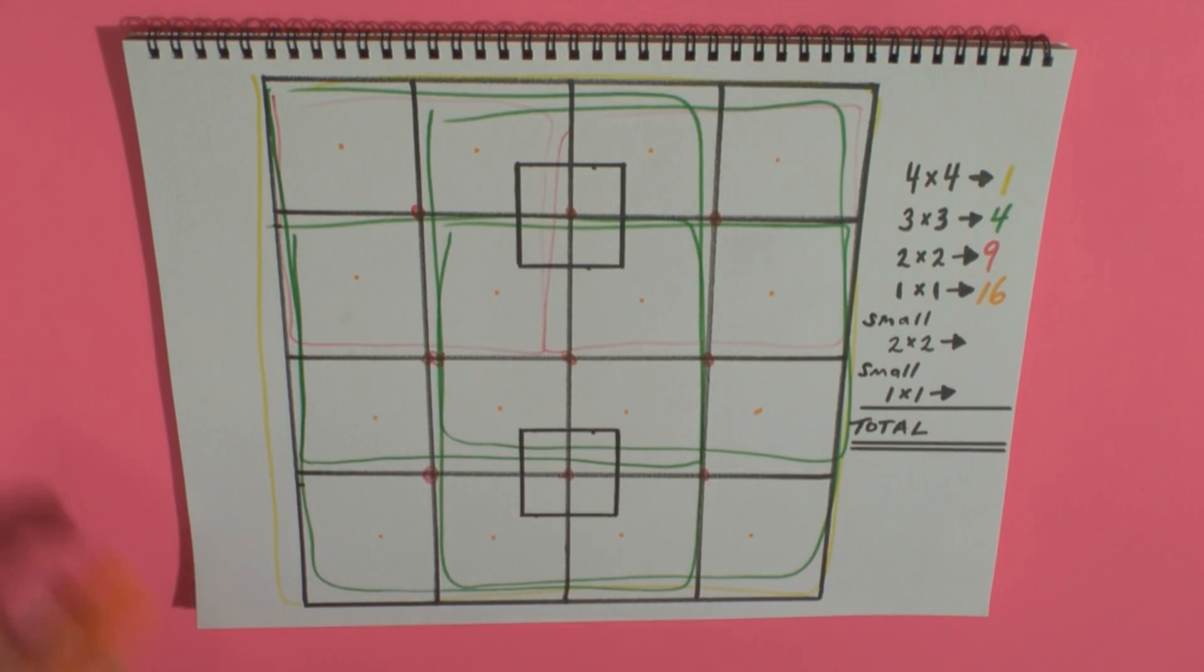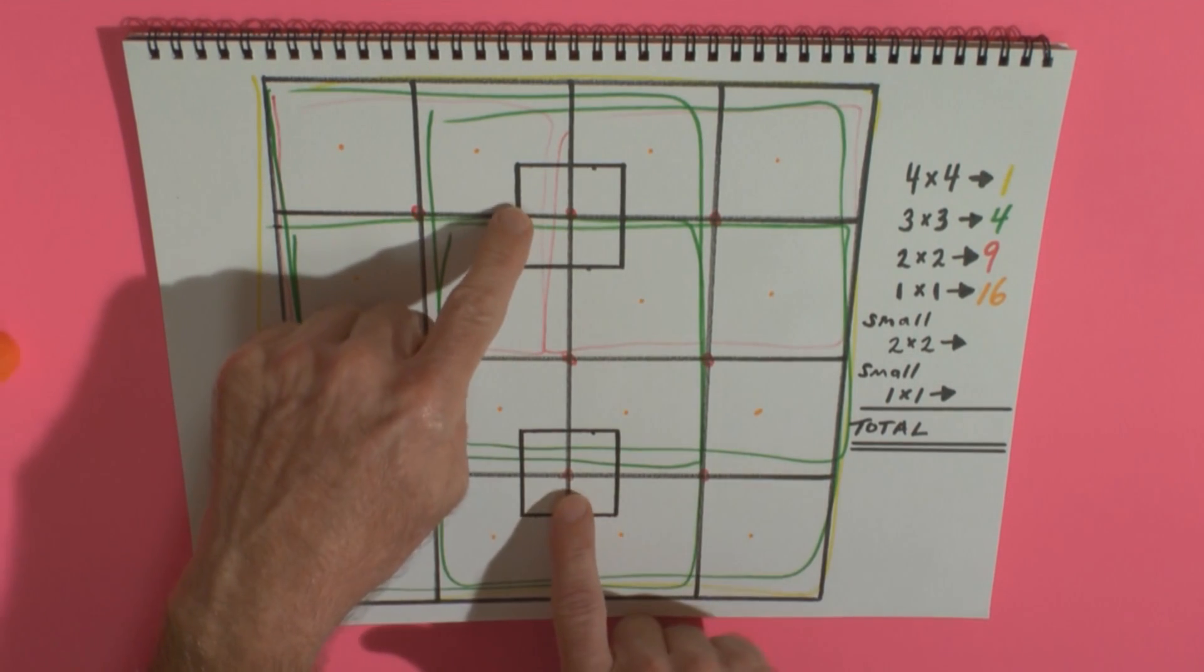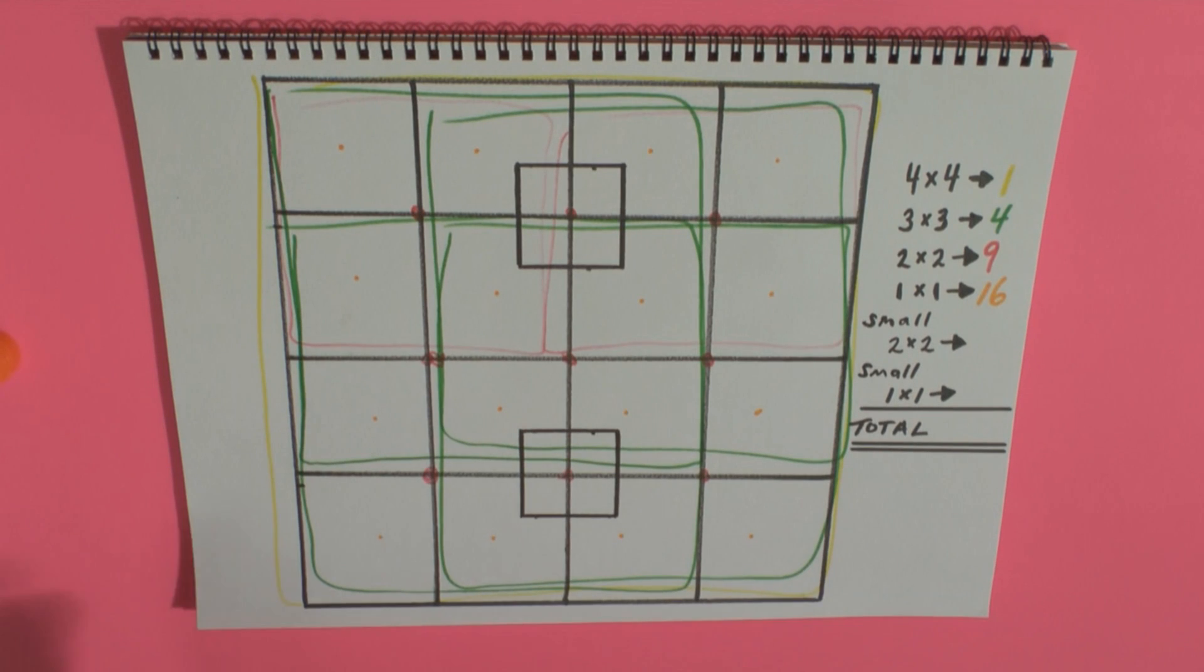And now small squares. We have these two small squares. So two by twos, small squares. We've got two of these.